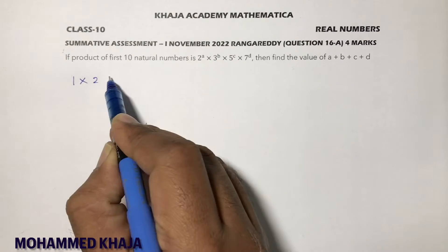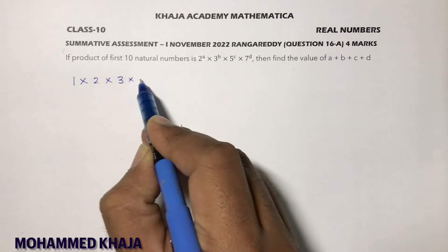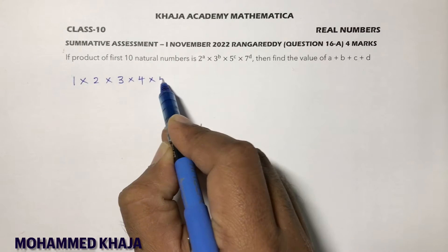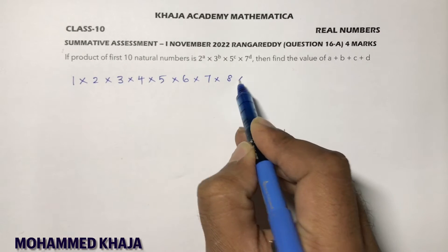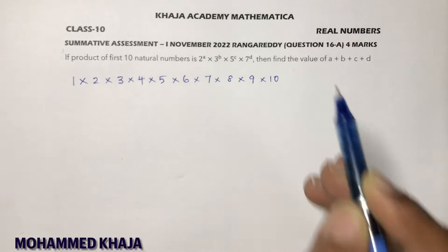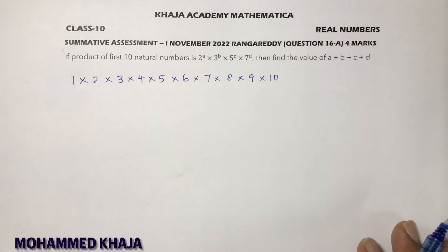So 1 × 2 × 3 × 4 × 5 × 6 × 7 × 8 × 9 × 10. This is the product of 10 natural numbers.